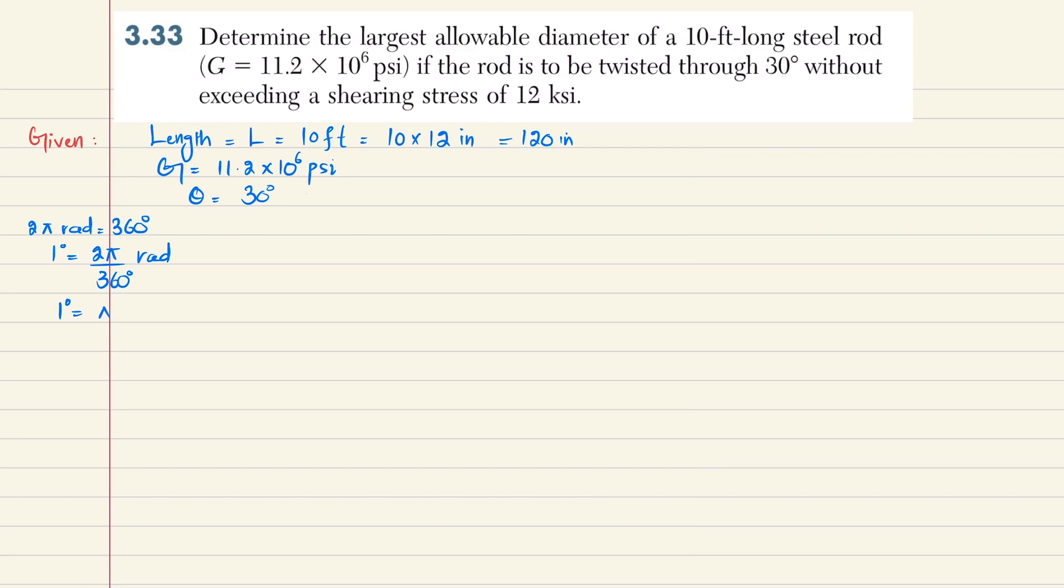We will convert it: 30 multiplied by π/180 radians, which equals 0.52360 radians.